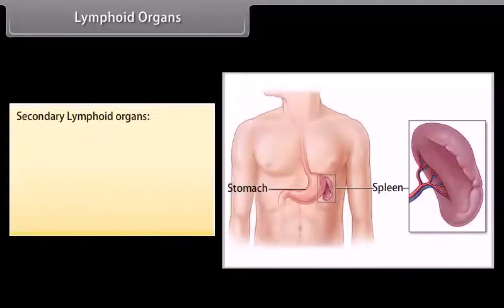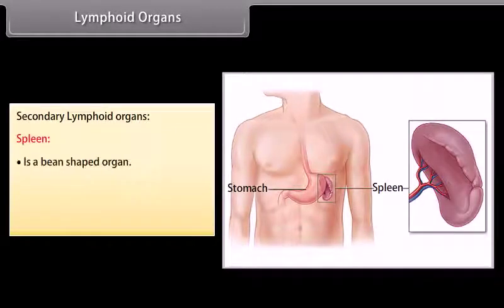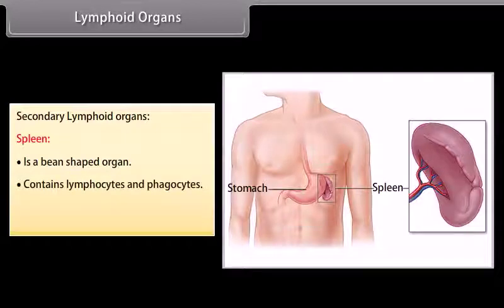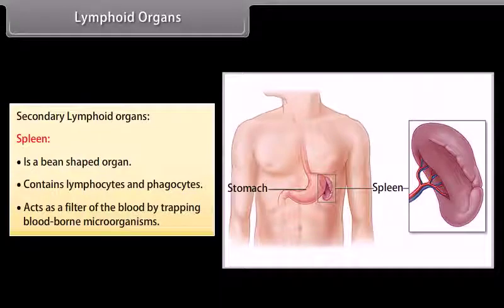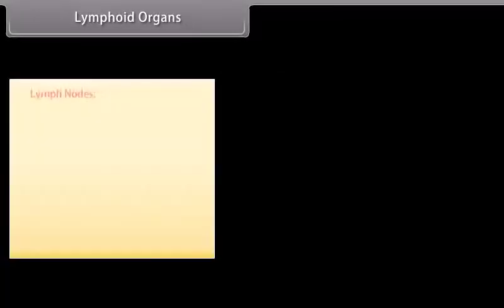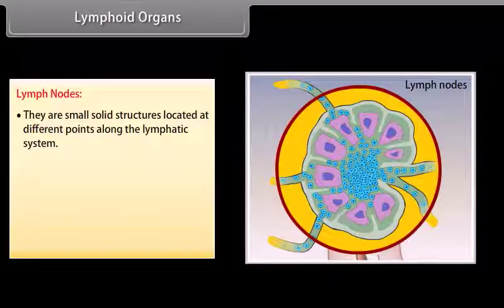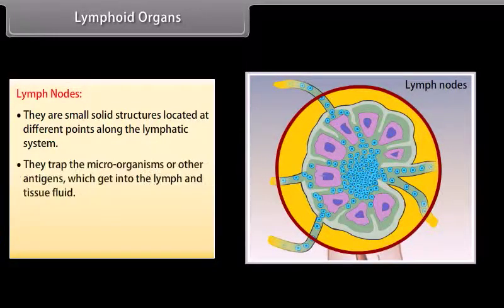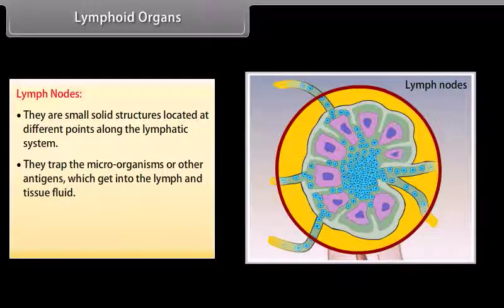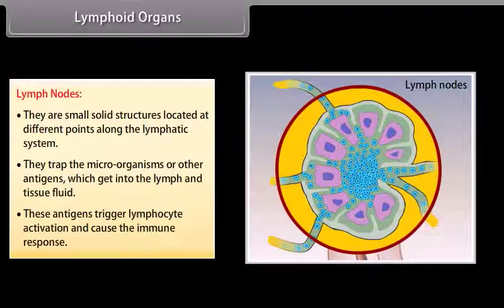The spleen is a bean-shaped organ that contains lymphocytes and phagocytes, and acts as a filter of the blood by trapping blood-borne micro-organisms. Lymph nodes are small solid structures located at different points along the lymphatic system. They trap micro-organisms or other antigens that get into the lymph and tissue fluid, triggering lymphocyte activation and the immune response.